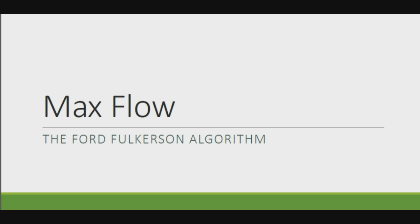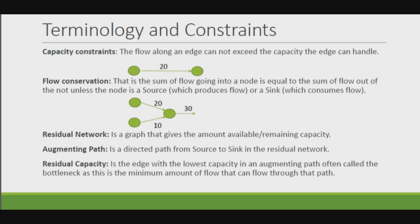In this video, we are going to learn about max flow and the Ford-Fulkerson algorithm for solving this problem. This algorithm dates back to the 1950s. The basic problem is to figure out how to send flow between particular edges in a graph while obeying the capacities, and then maximizing the amount of flow that goes from the source to the terminal.